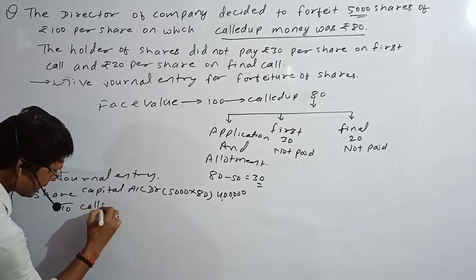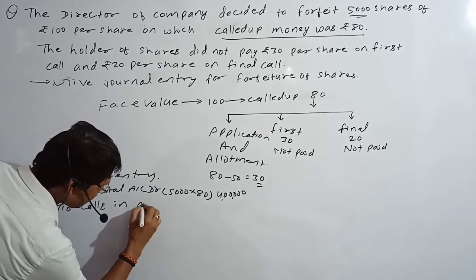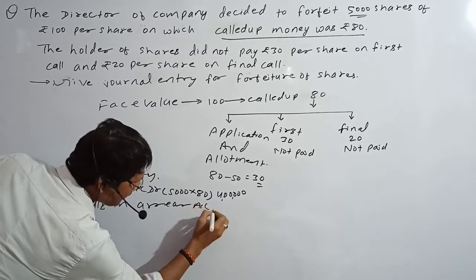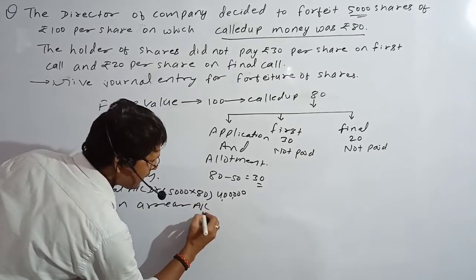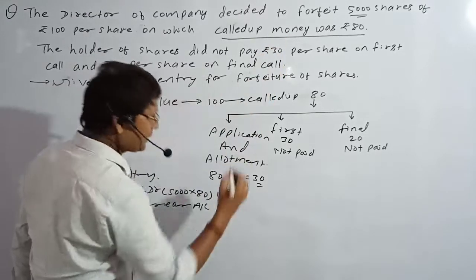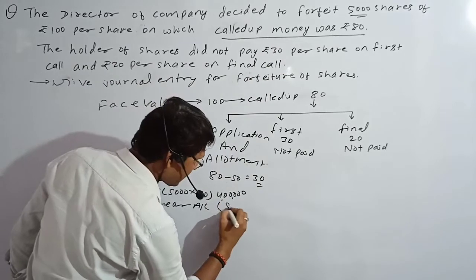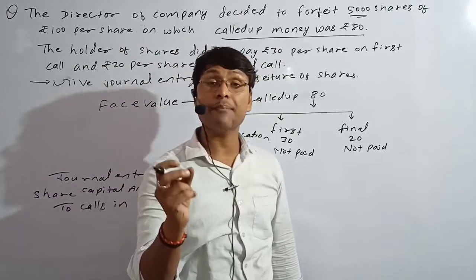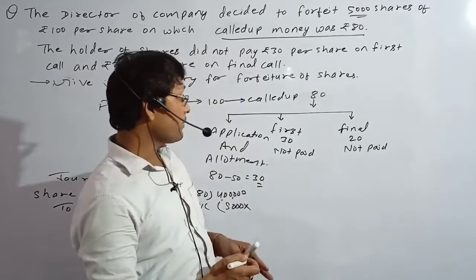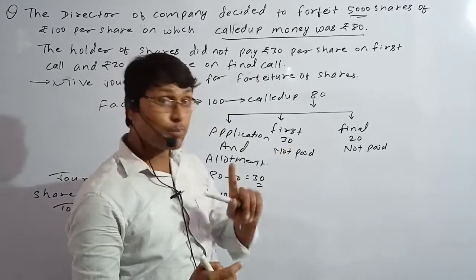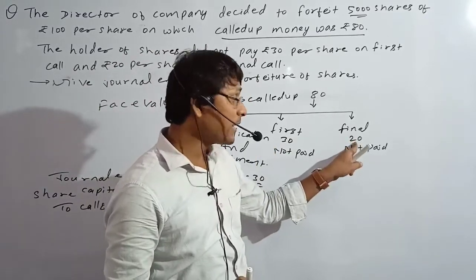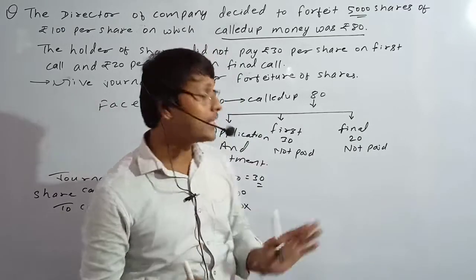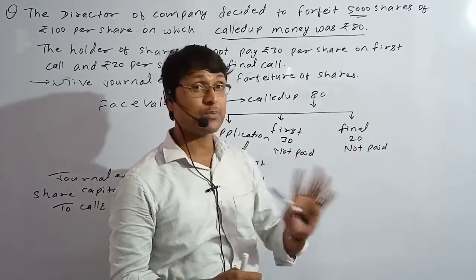Now, to Calls in Arrear account. First call: ₹30 × 5,000 = ₹1,50,000. Final call: ₹20 × 5,000 = ₹1,00,000. The amount not given — first call arrear is ₹1,50,000 and final call arrear is ₹1,00,000. These amounts were not paid by the holder.